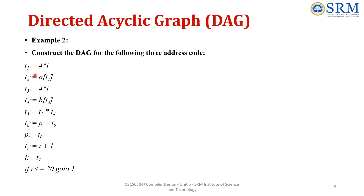First, take t1 = 4 * i. Create the nodes 4 and i, and connect them with the operator asterisk. Label the operator node with the LHS, which is t1. Next, the second statement is t2 = a[t1]. Already we have t1. Connect it with the array operator, with a as the left node. Connect a and t1 with the array operator, and label this operator node with t2.